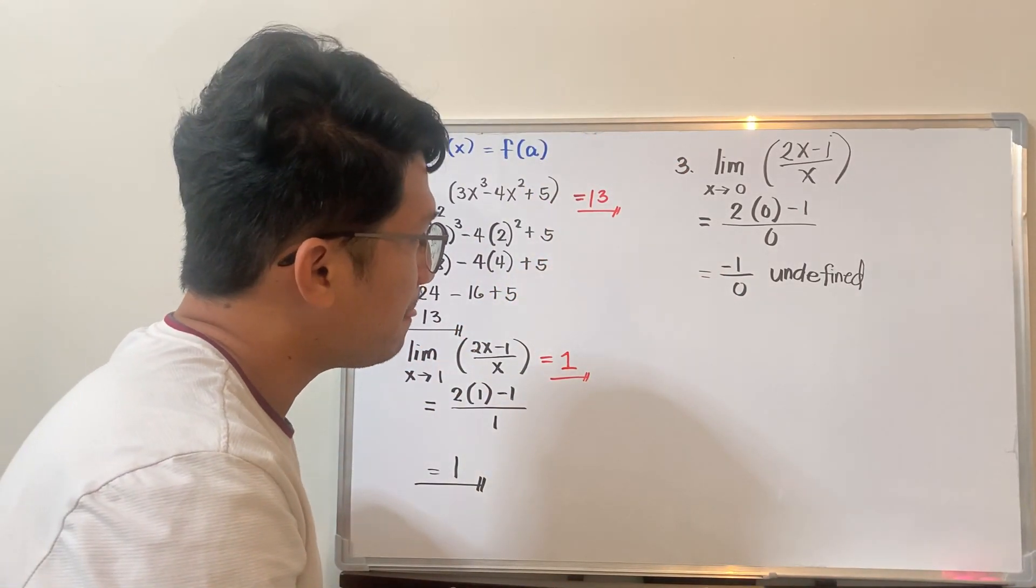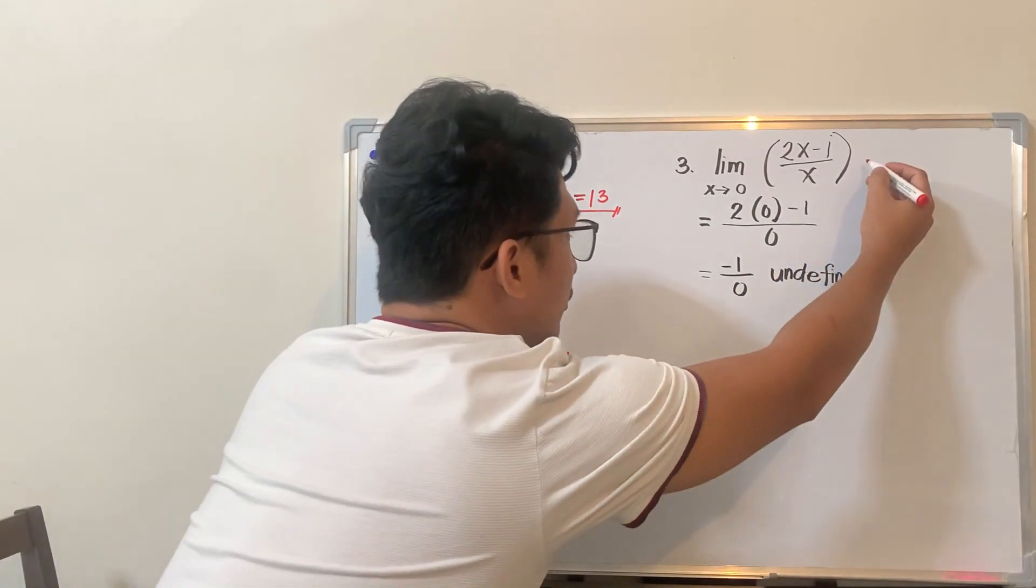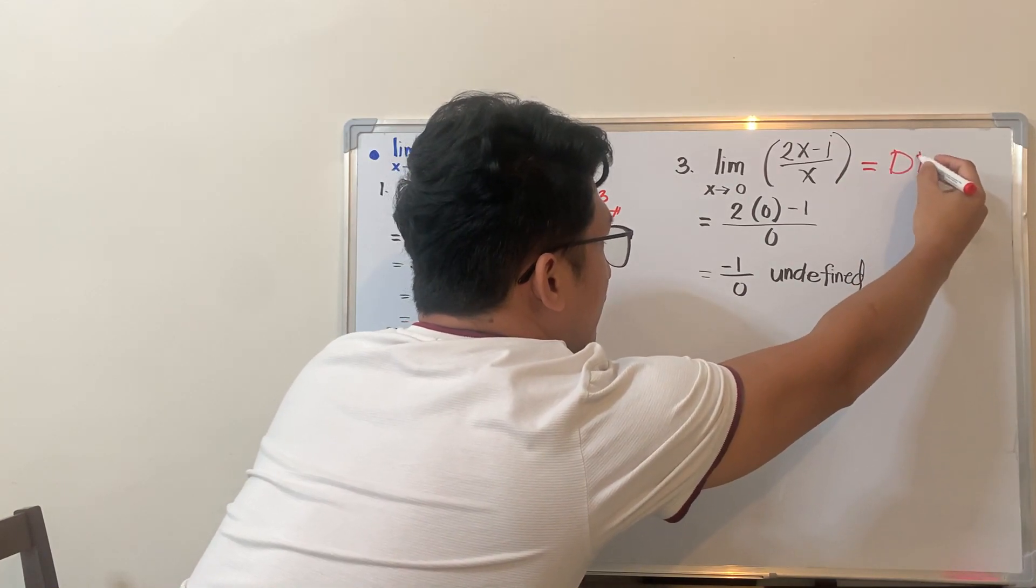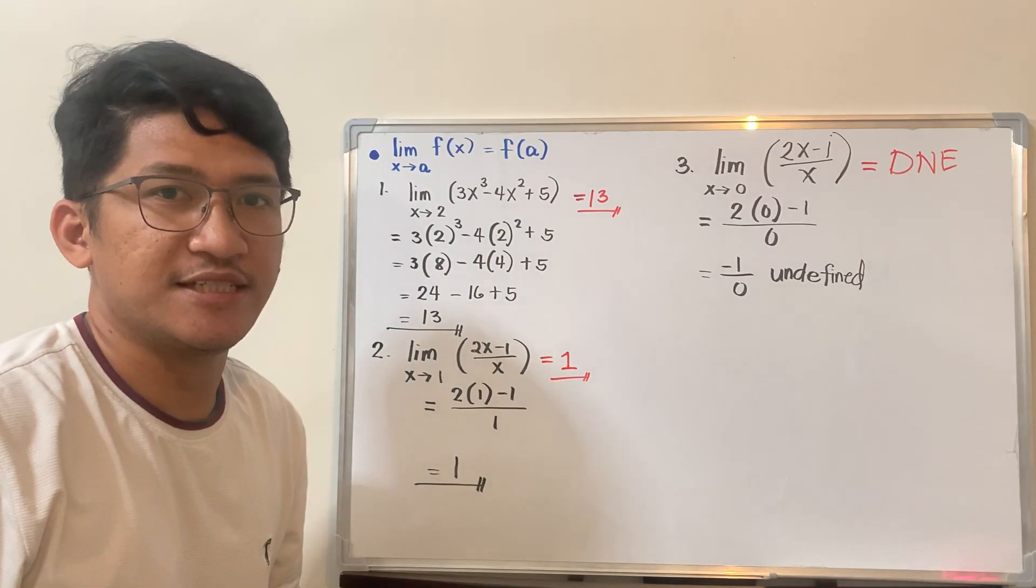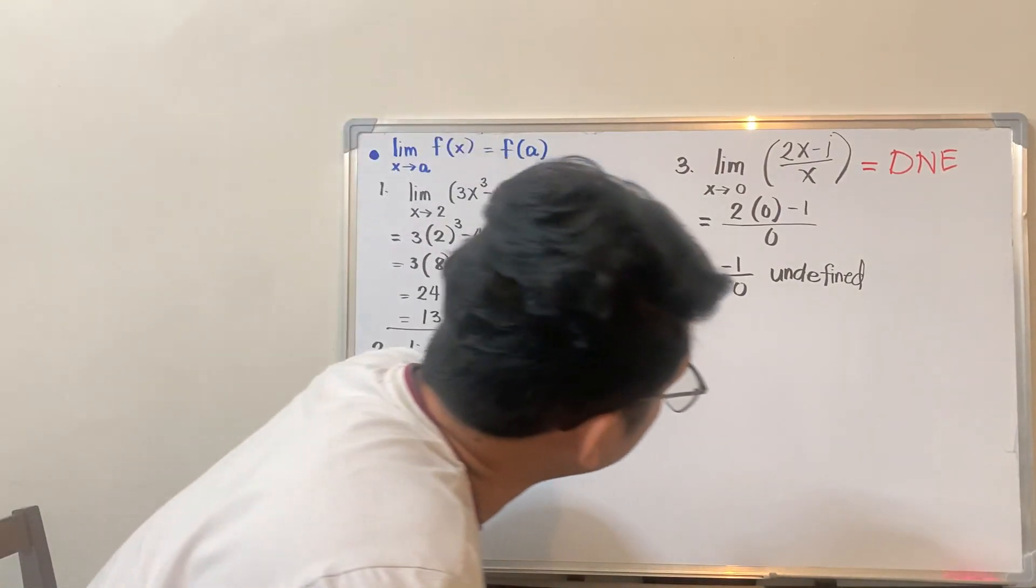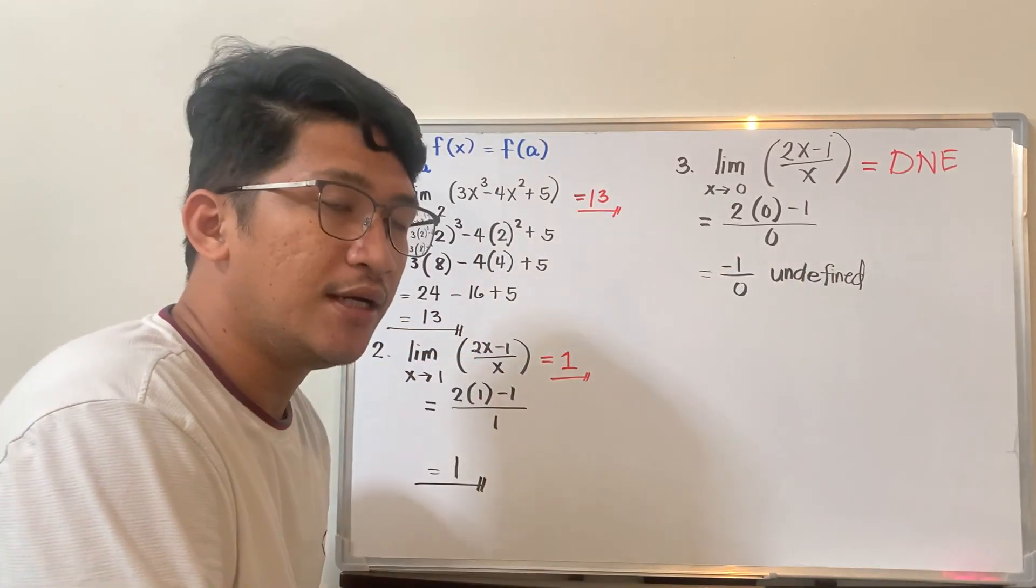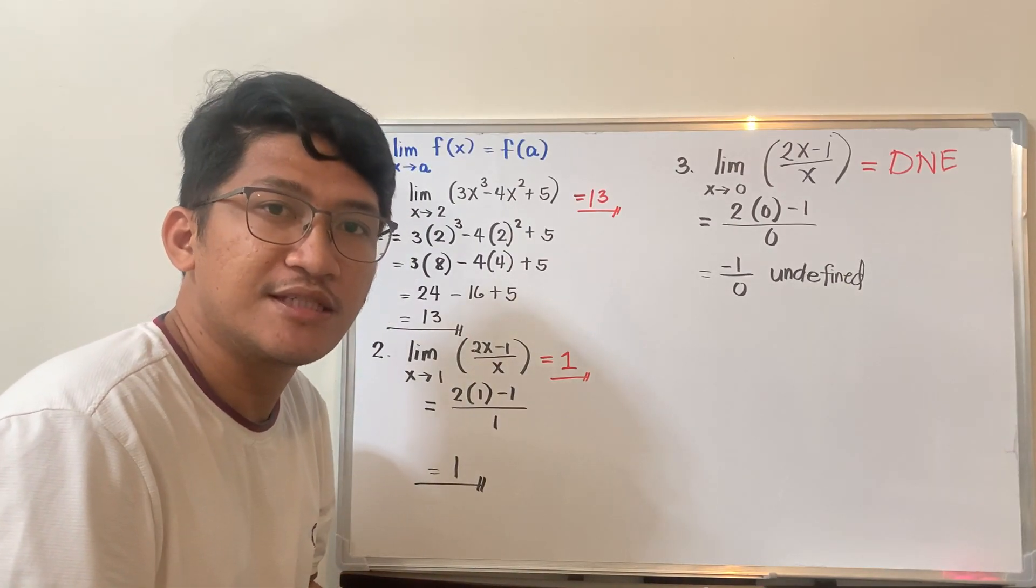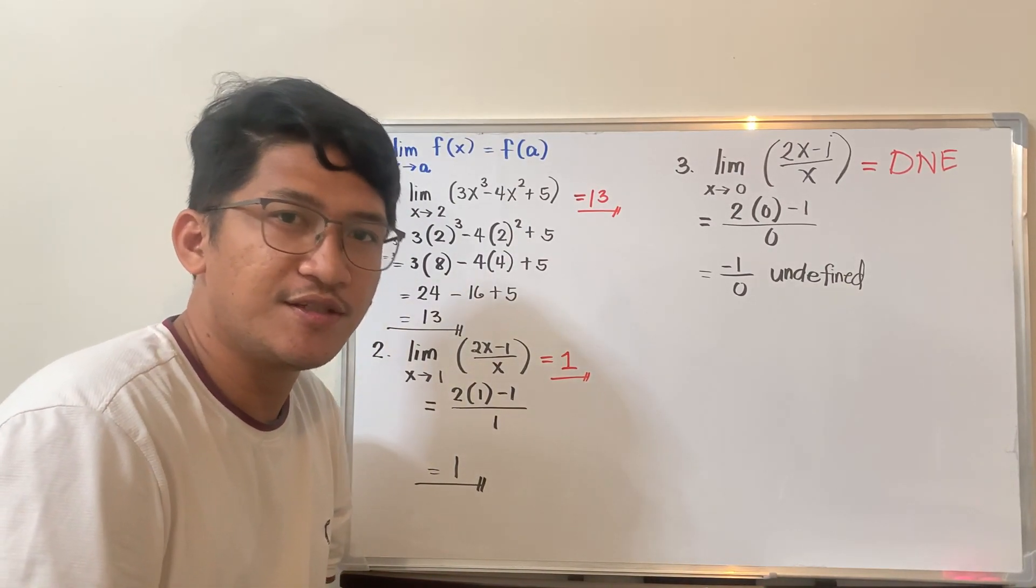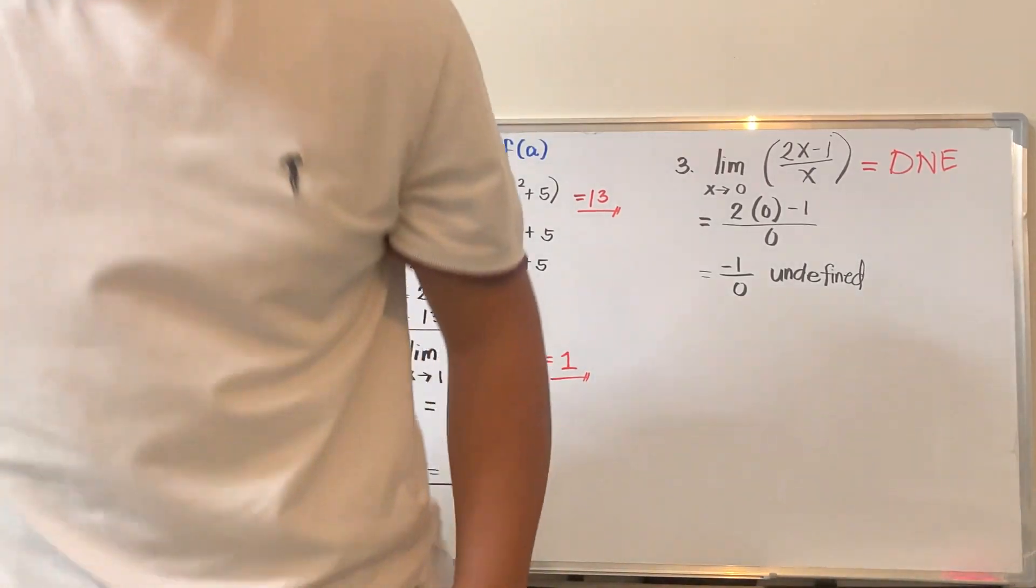So if this happens, then the conclusion will be, limit does not exist. Okay, so always remember that, if undefined is the result after substitution, the conclusion will be DNE. So in other words, the limit of the function does not exist. Okay, so that's it for this example. Thank you.